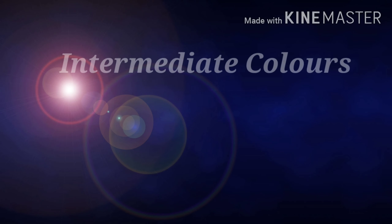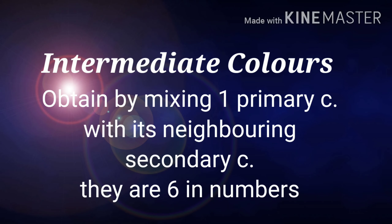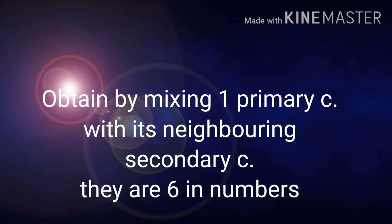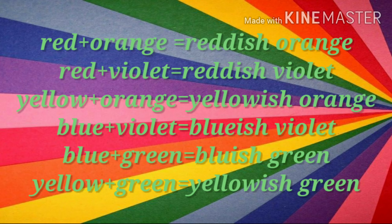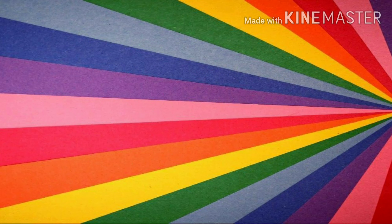Intermediate colors are obtained by mixing one primary color with its neighboring secondary color. They are six in number and placed in between primary and secondary colors. Red plus orange gives reddish orange. Red plus violet gives reddish violet. Yellow plus orange gives yellowish orange. Blue plus violet gives bluish violet. Blue plus green gives bluish green. And yellow plus green gives yellowish green.